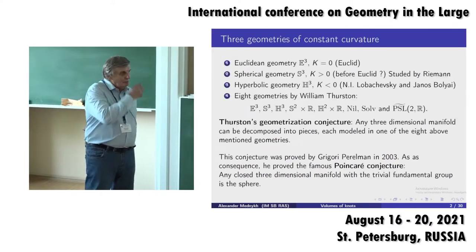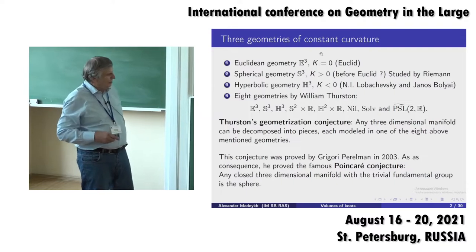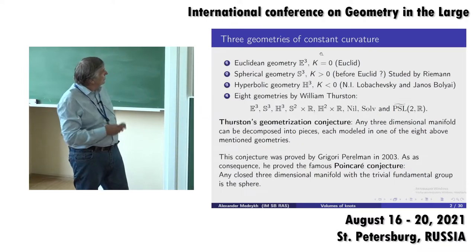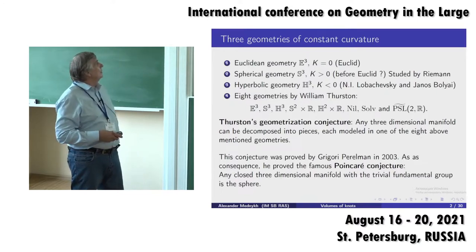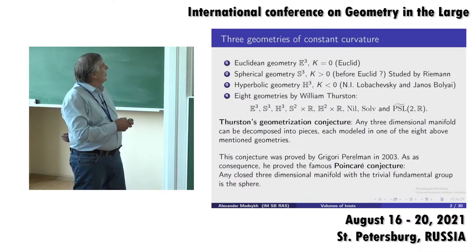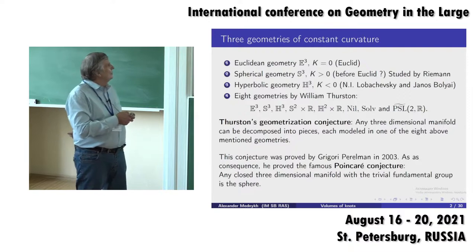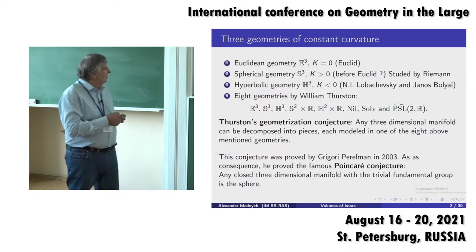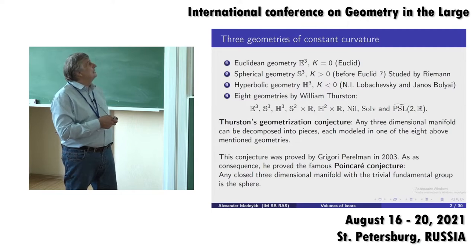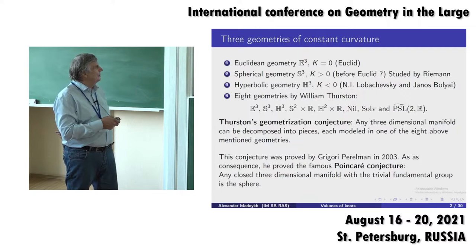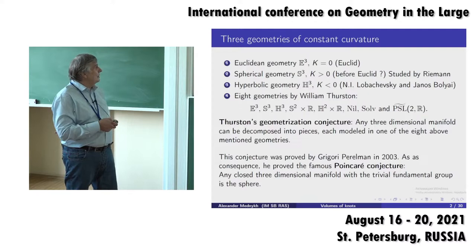The beginning of the story is very similar to the lecture of Professor Vesnin, but of course this is a common part. Mostly we will deal with Euclidean geometry, meaning the curvature is always equal to zero. But sometimes we deal with spherical geometry — in this case the sectional curvature is fixed and greater than zero — and also with hyperbolic geometry with negative curvature.